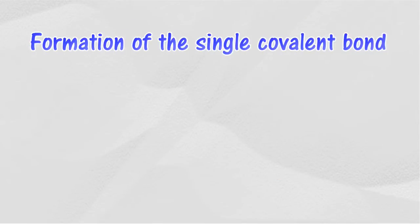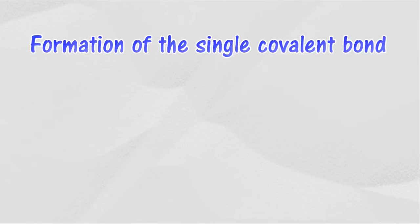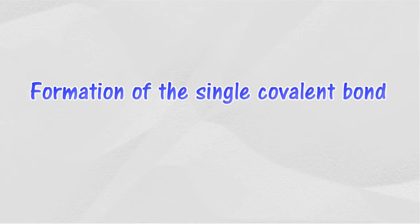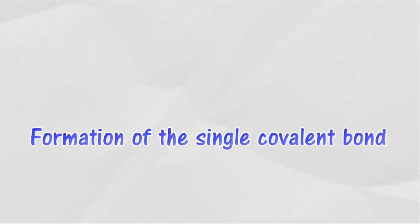The type of covalent bond formed in a covalent compound depends on the number of electron pairs shared between nonmetal atoms. A single covalent bond is the covalent bond formed through the sharing of a pair of electrons between two nonmetal atoms.